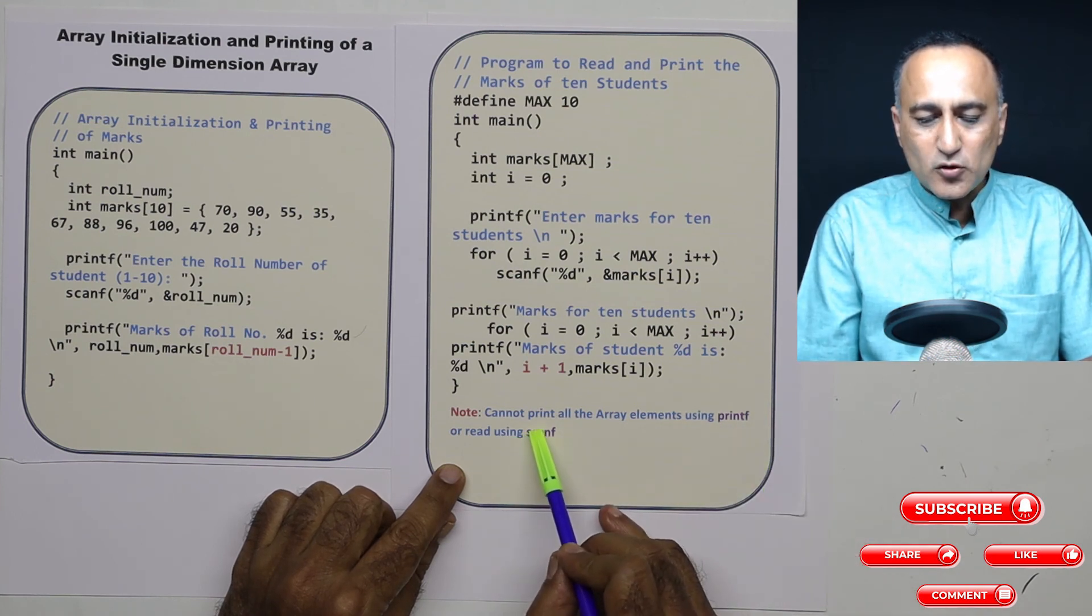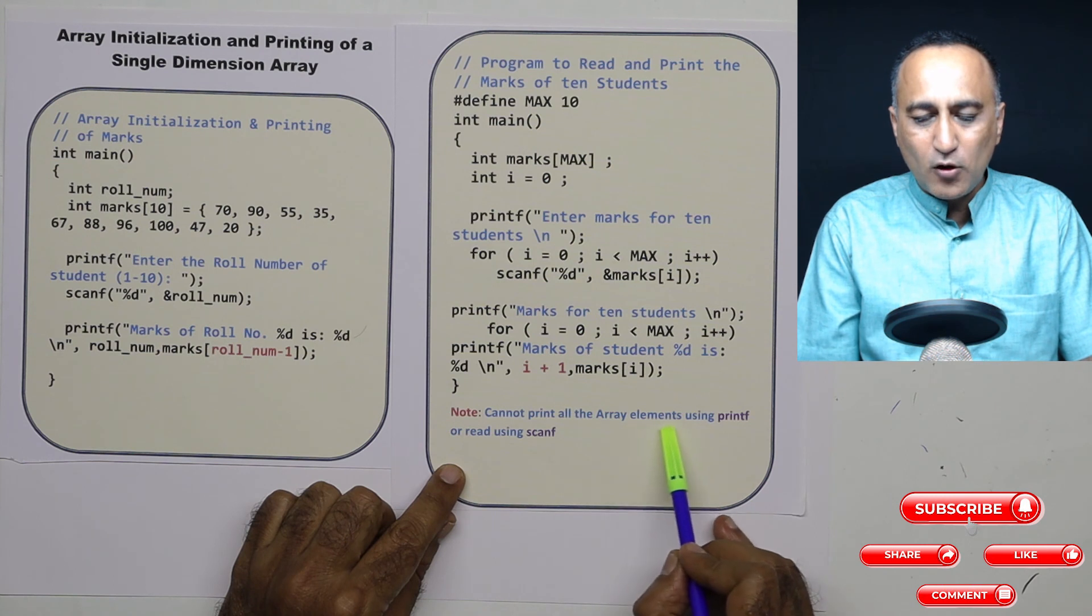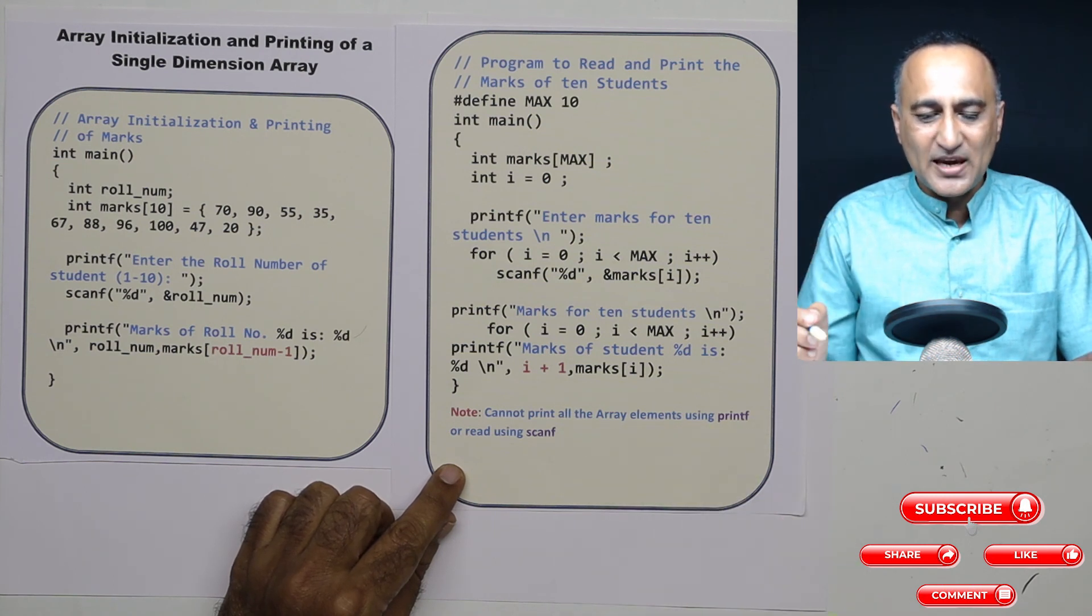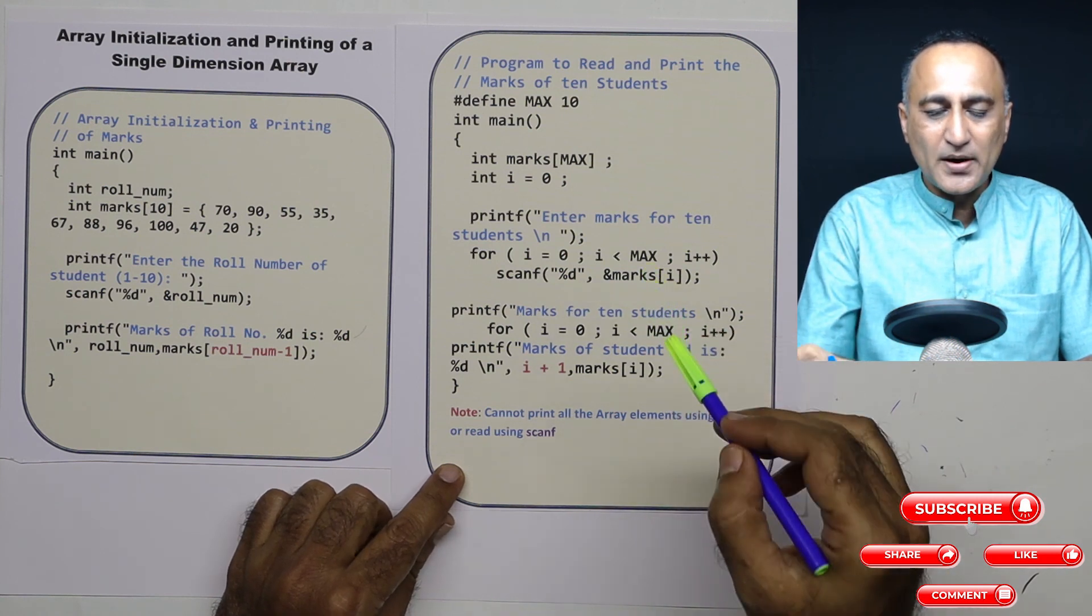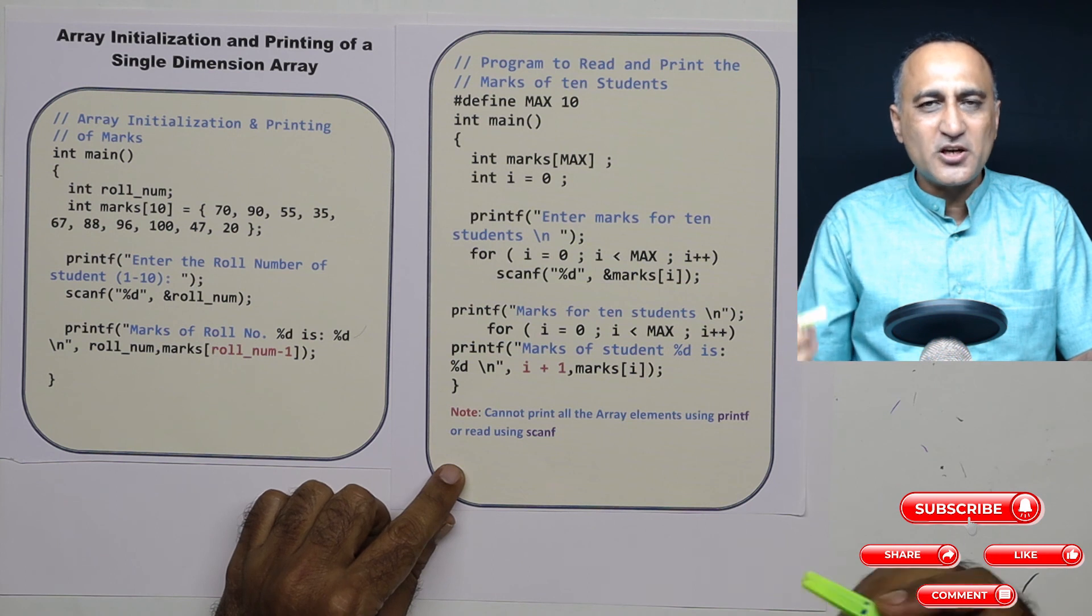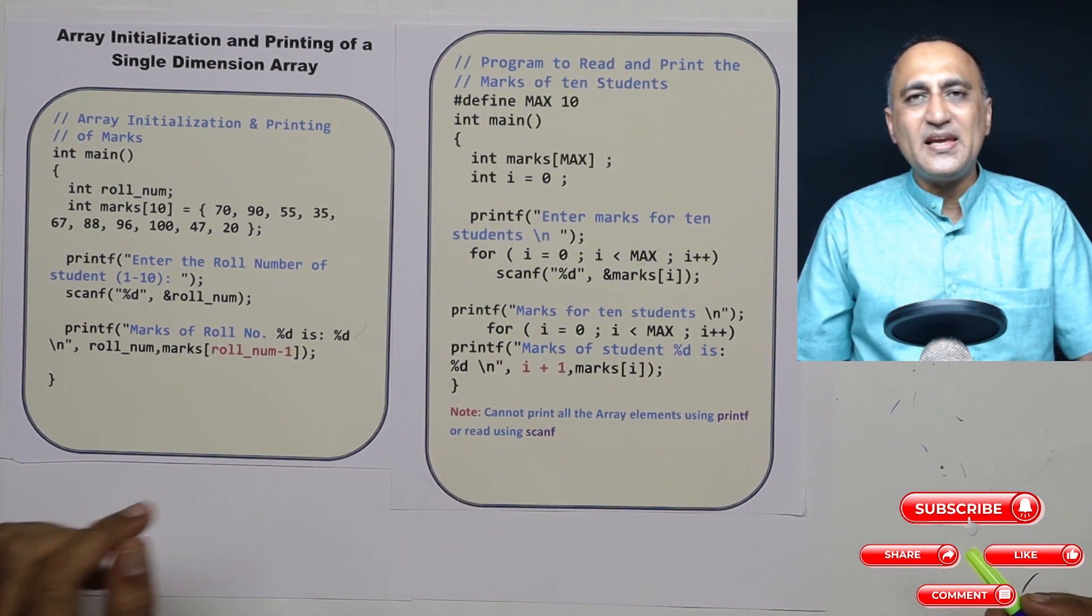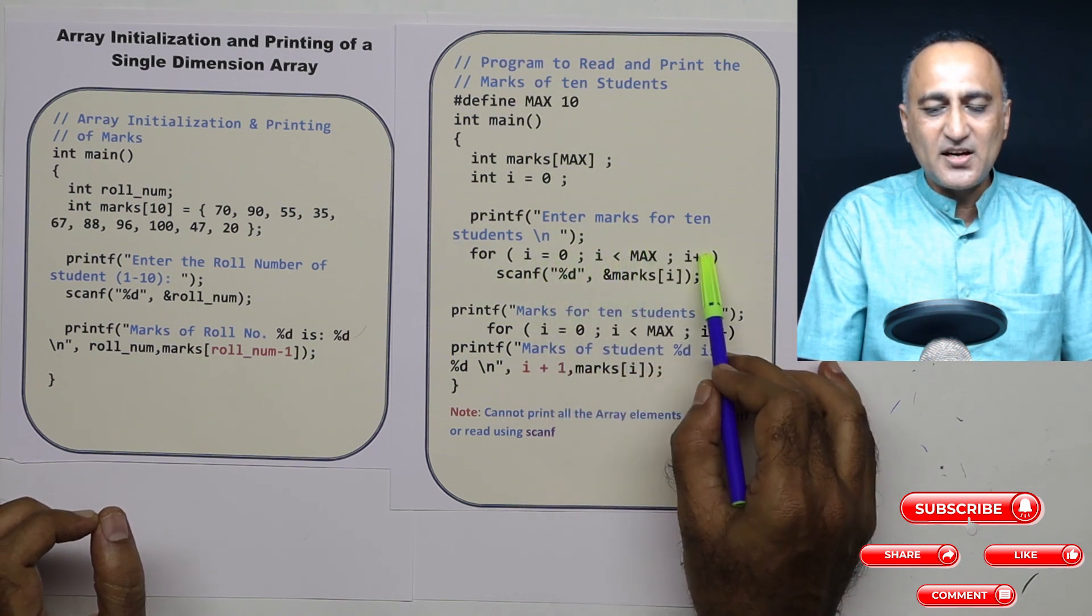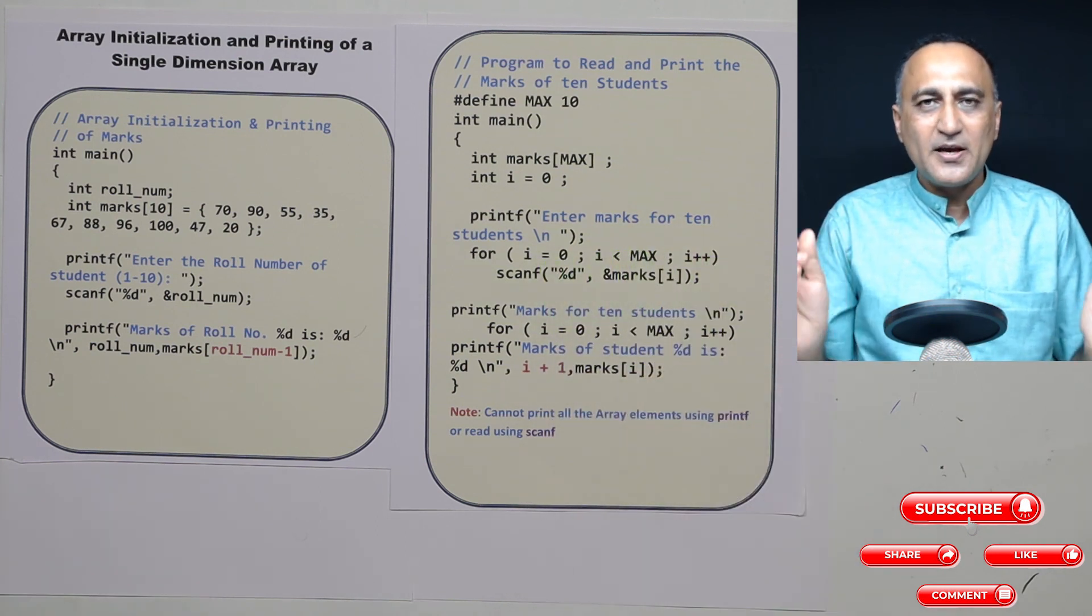I had already told you there is no simple way of printing all the array elements in one shot using the printf or scanf. You must use some loop, either the for or while. Almost every time you will generally be using the for loop for printing elements of the array because it provides you the facility to initialize, check the condition, and increment in a very compact manner.